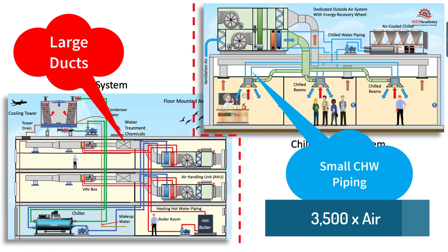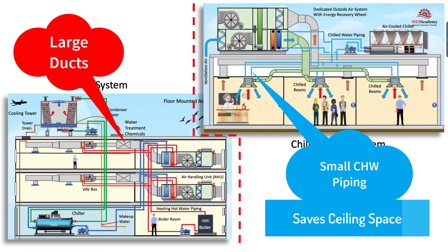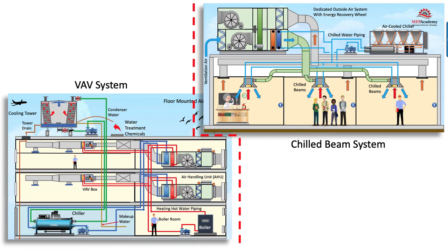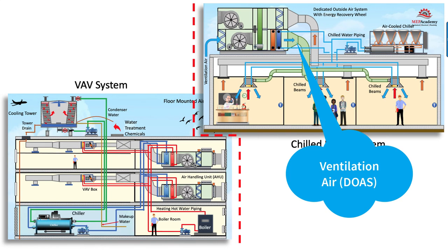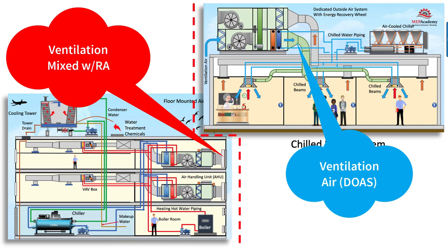This saves on ceiling space and allows for lower floor-to-floor heights or higher ceilings. The VAV system increases the volume of air to satisfy the space, while the chilled beam system increases the flow of chilled water. The ventilation air delivered using the chilled beam system is the proper amount based on space usage and occupancy level. With a VAV system, the volume of ventilation air is less precise, as ventilation air is mixed with return air before being delivered to the space.